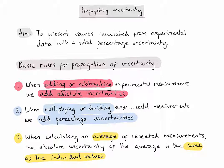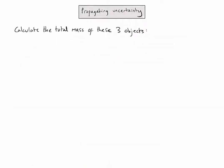In this first example, we're going to try and calculate the total mass of three objects, and make sure that we propagate or follow through those calculations with the uncertainties as well. As with any experimental measurement, each of these masses has the absolute uncertainty value following the measurement after the plus or minus sign.